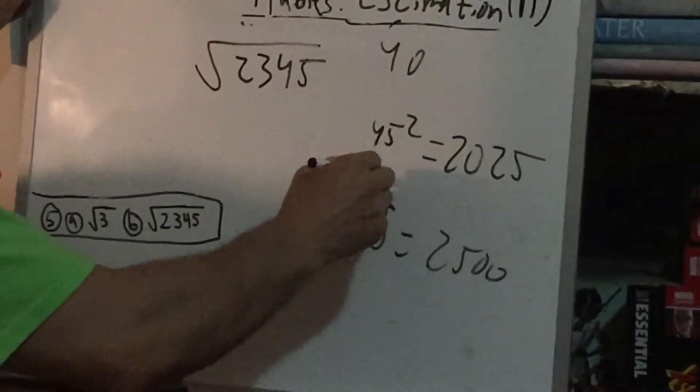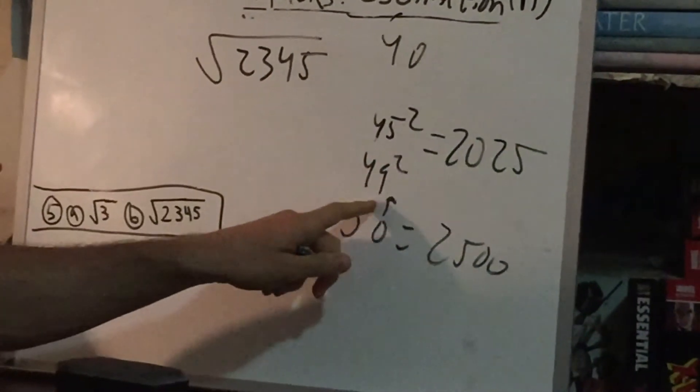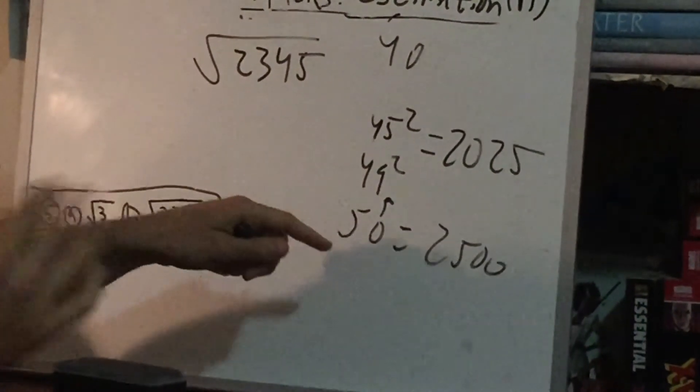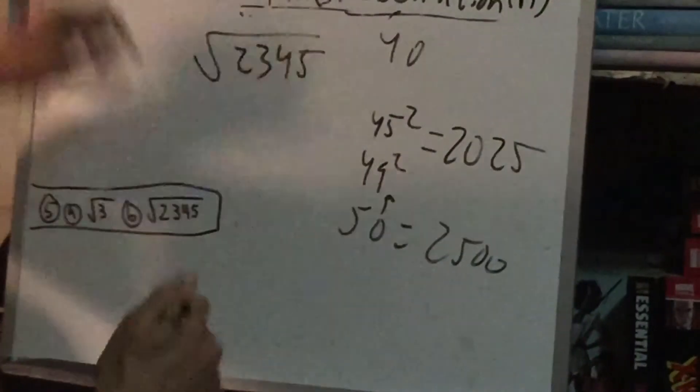So we try 49 squared. Now, again, we could calculate this, but we're going to use all the mental math tricks we've discussed previously. Let's review those very quickly.